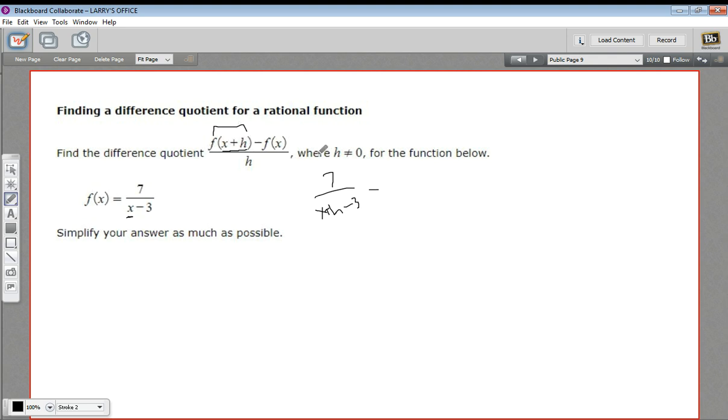And then we subtract f of x, the function, so that's 7 over x minus 3. And all of that goes over h.